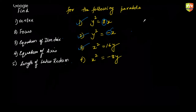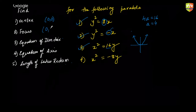Moving on to the third problem: x² = 16y. Make a rough figure in your mind — it's going to be a parabola opening upwards. Vertex will still be at (0, 0). Focus would be at (0, a). To know your a, just equate 16 to 4a, so a = 4. Focus is at (0, 4). Equation of the directrix would be y = -a = -4. Equation of the axis is going to be the y-axis: x = 0. And the length of the latus rectum is going to be 16 units.